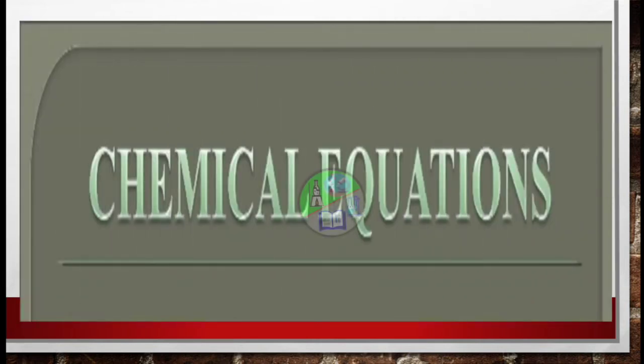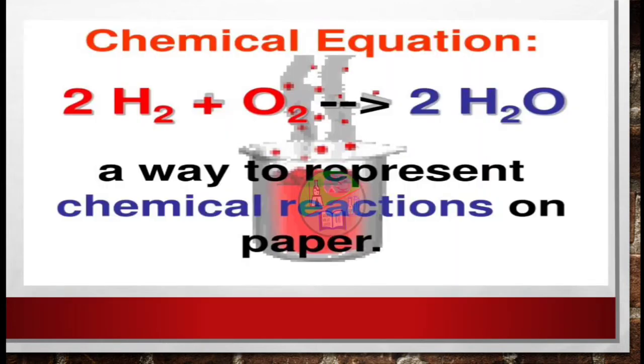So what is a chemical equation? Let's answer it. It is a set of symbols and formulas representing the reactants and products, that is the molecules present in the chemical reaction, and it also represents the conditions required in the particular reaction. So basically it is a way to represent chemical reactions on paper.